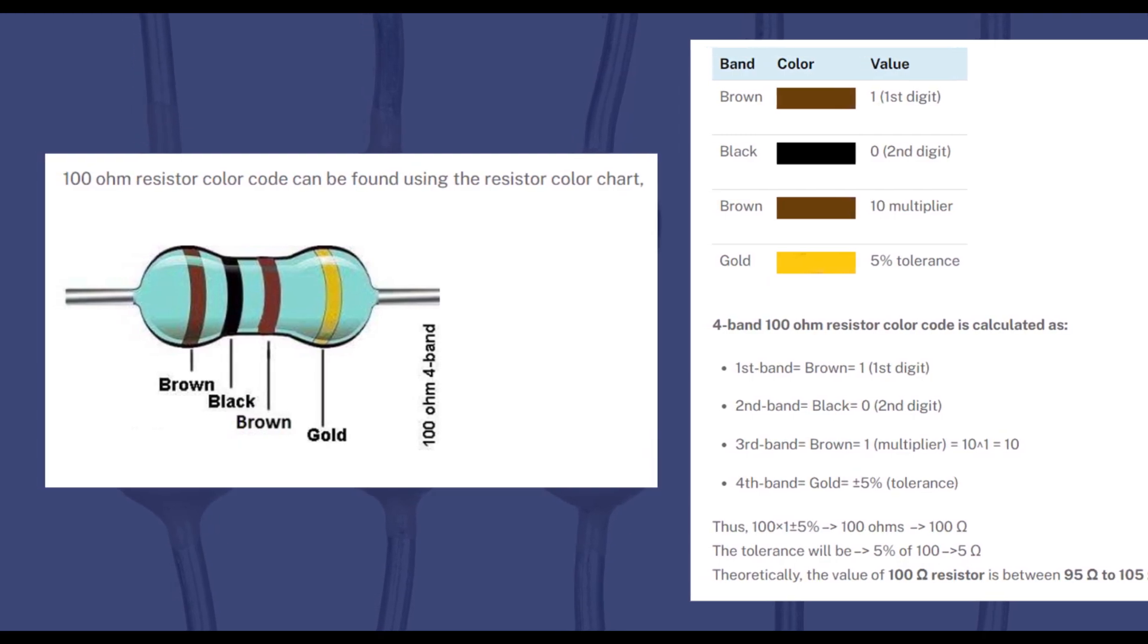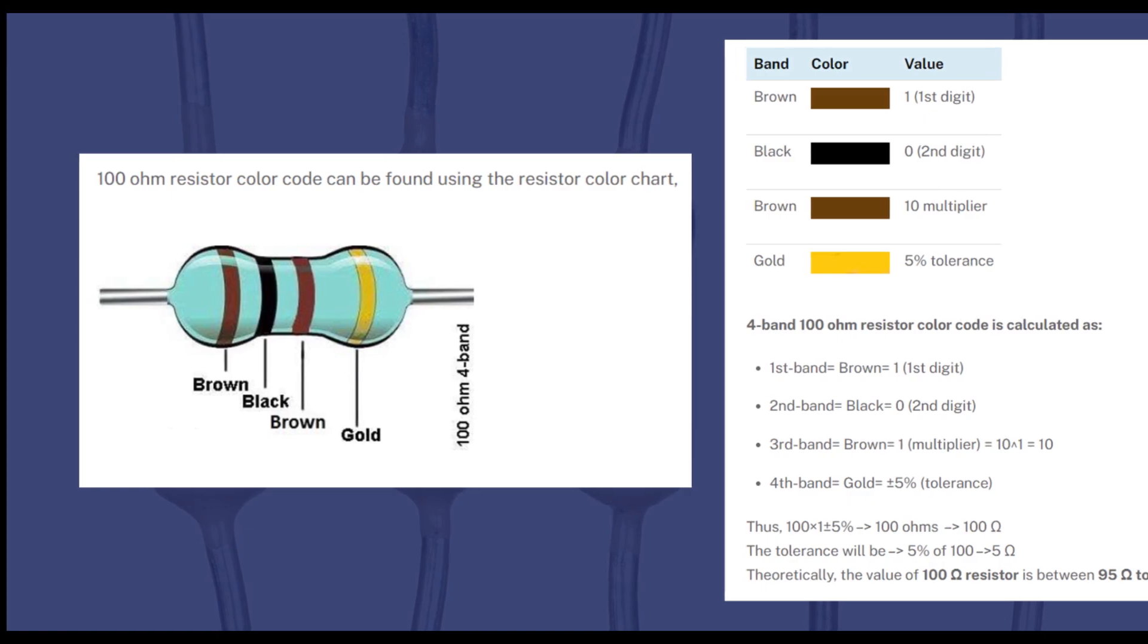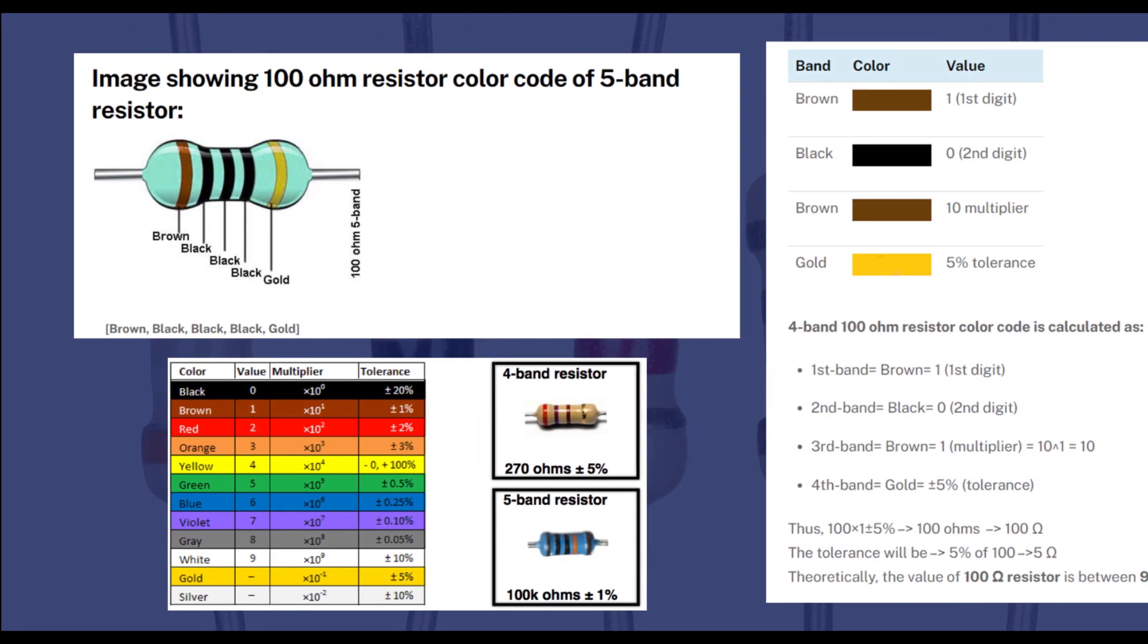Please note, theoretically, the value of 100 ohms resistor is between 95 ohms to 105 ohms.